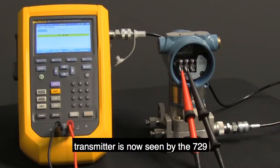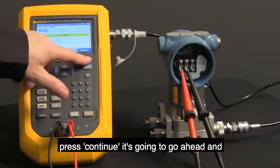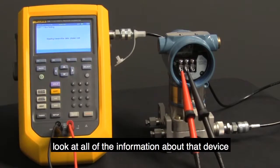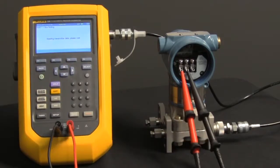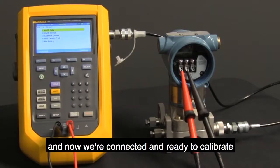Transmitter is now seen by the 729. Press continue, it's going to go ahead and look at all the information about that device. And now we're connected and ready to calibrate.